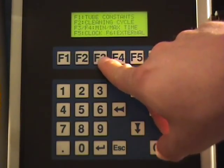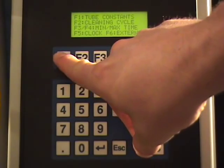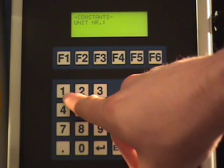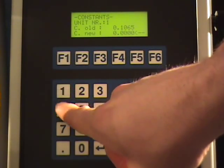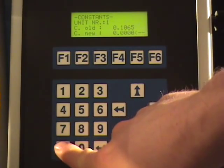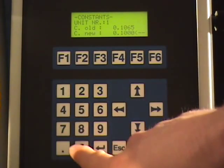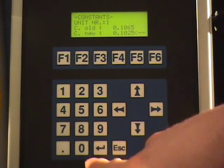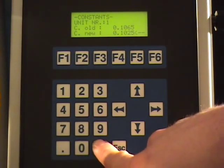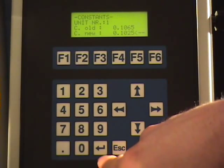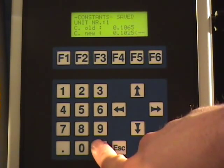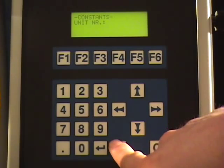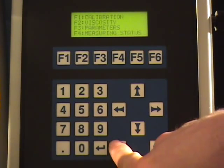Choosing F3 from the main menu gives access to other parameters. After pressing F1 tube constants from the parameter menu, the user can manually enter the tube constant for each tube. During the calibration procedure, the system automatically calculates and stores the tube constant based on the measurement results, but here you can manually enter the tube constant, for instance, in case you've replaced the tube. Press enter to confirm the entry or press escape to discard it.